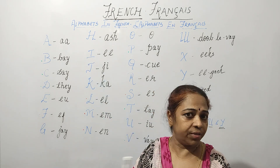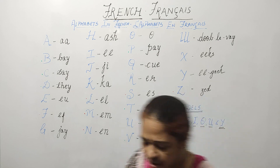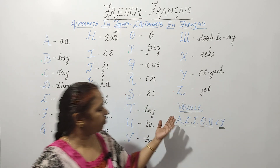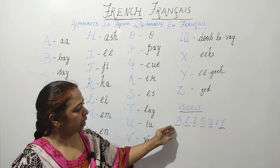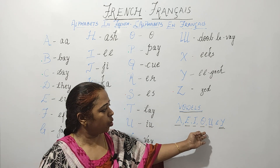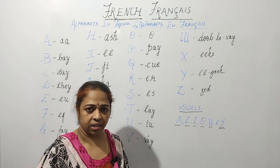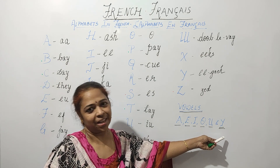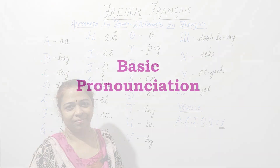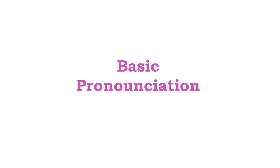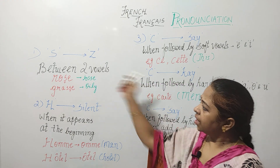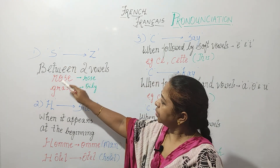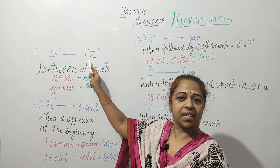French has the following vowels: A, E, I, O, U, and Y. Y is an extra vowel that is present in French. When S occurs between two vowels, it is pronounced as Z.